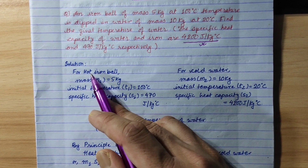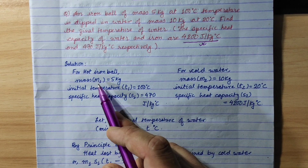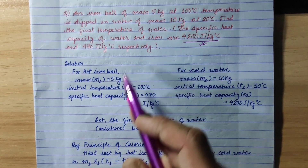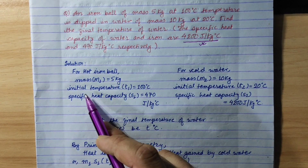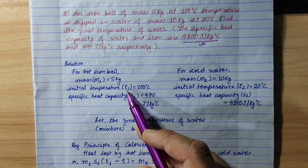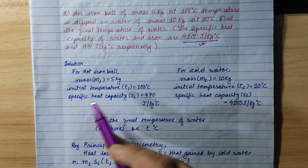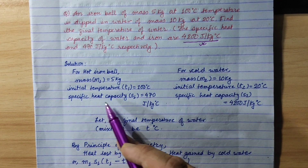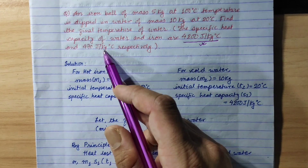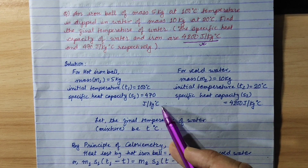For the hot iron ball: mass M1 is 5 kg, initial temperature T1 is 100 degree Celsius, specific heat capacity S1 is 470 joules per kg per degree Celsius.